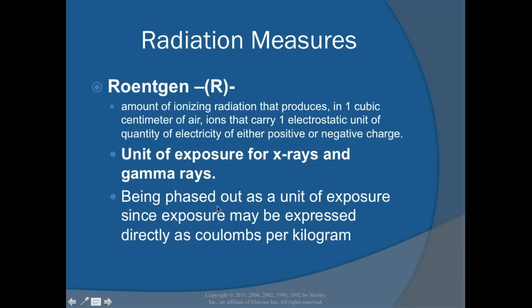The Roentgen is the amount of ionizing radiation that produces in one cubic centimeter of air ions carrying one electrostatic unit of electrical charge, either positive or negative. Air is the key word. It is the unit of exposure for x-rays and gamma rays used in diagnostic radiology, and it is being phased out in favor of coulombs per kilogram.